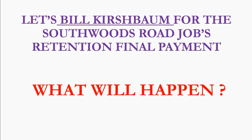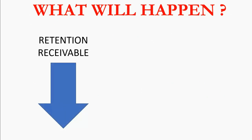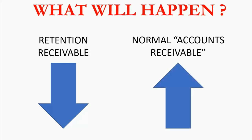What will happen in the trial balance at the moment we send the bill for the final outstanding remainder of the retention? In the trial balance, retention receivable actually goes down because it's no longer indicated as owed as retention. Normal accounts receivable will go up, so it basically takes the balance of what's owed for retention and moves it over to the normal accounts receivable balance — that's part of the process of sending it on an invoice.